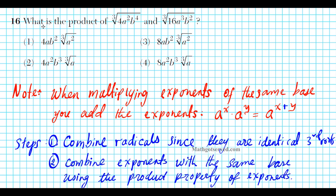It says, what is the product of the third root of 4a squared b to the fourth, and the third root of 16a to the third b squared? One thing you want to note is that whenever you're multiplying exponents of the same base, you add the exponents — you basically add the powers. These are the steps we're going to use for this problem.